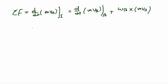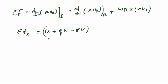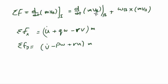The summation of forces along the x-axis equals m times (u-dot plus qw minus rv). The summation of forces along the y-axis equals m times (v-dot minus pw plus ru). The summation of forces along the z-axis equals m times (w-dot plus pv minus qu). These results are straightforward — you substitute all the vectors and get these answers.